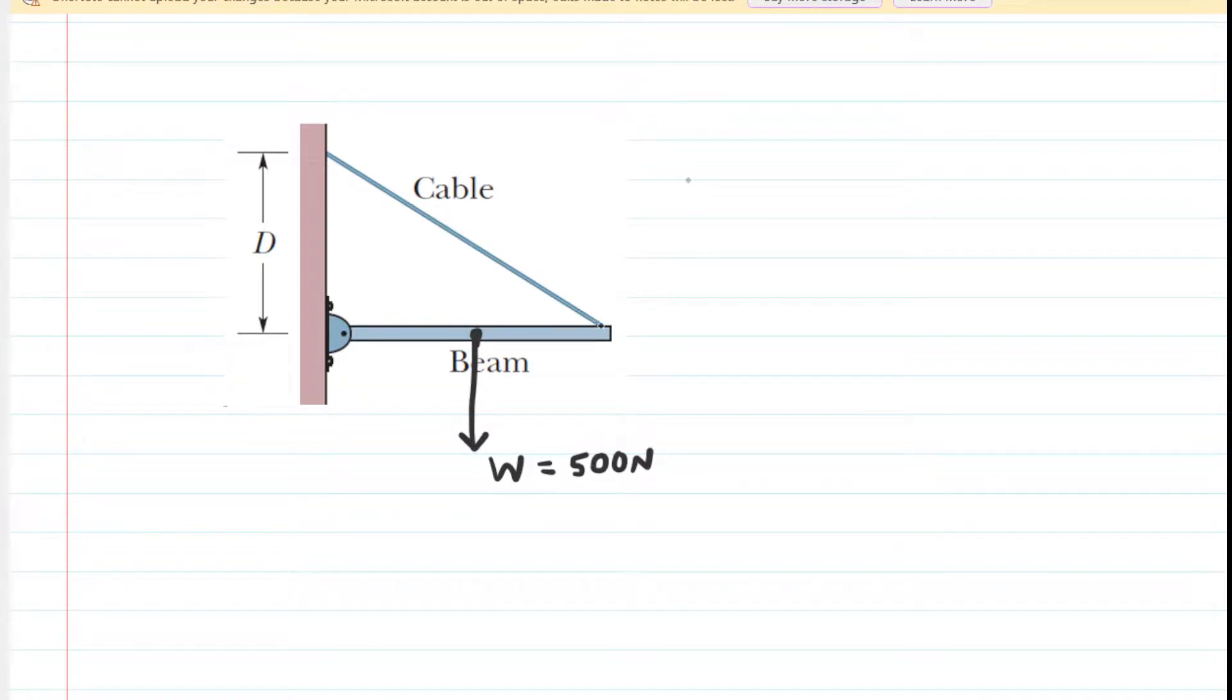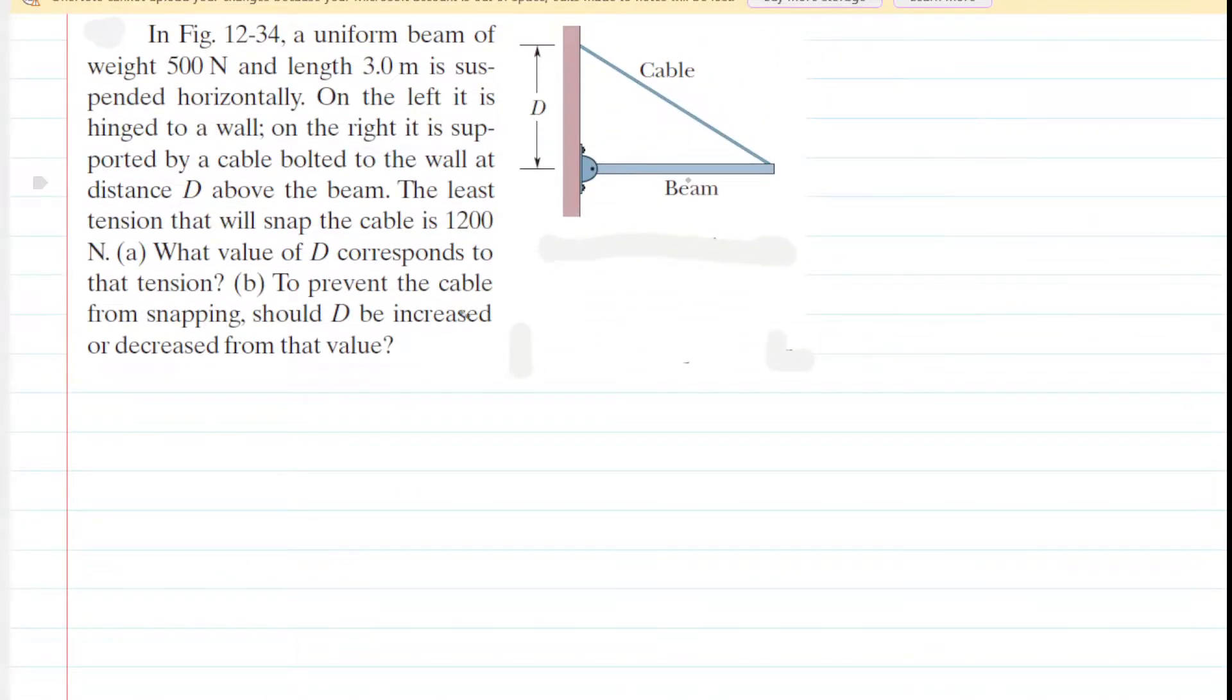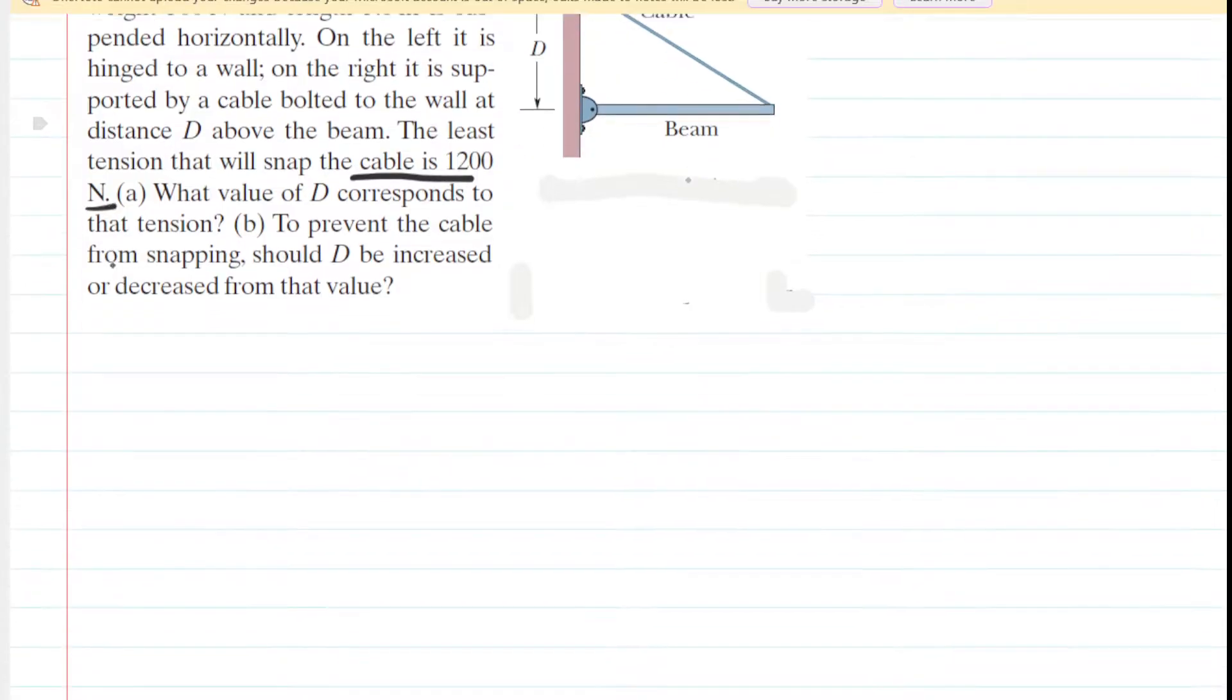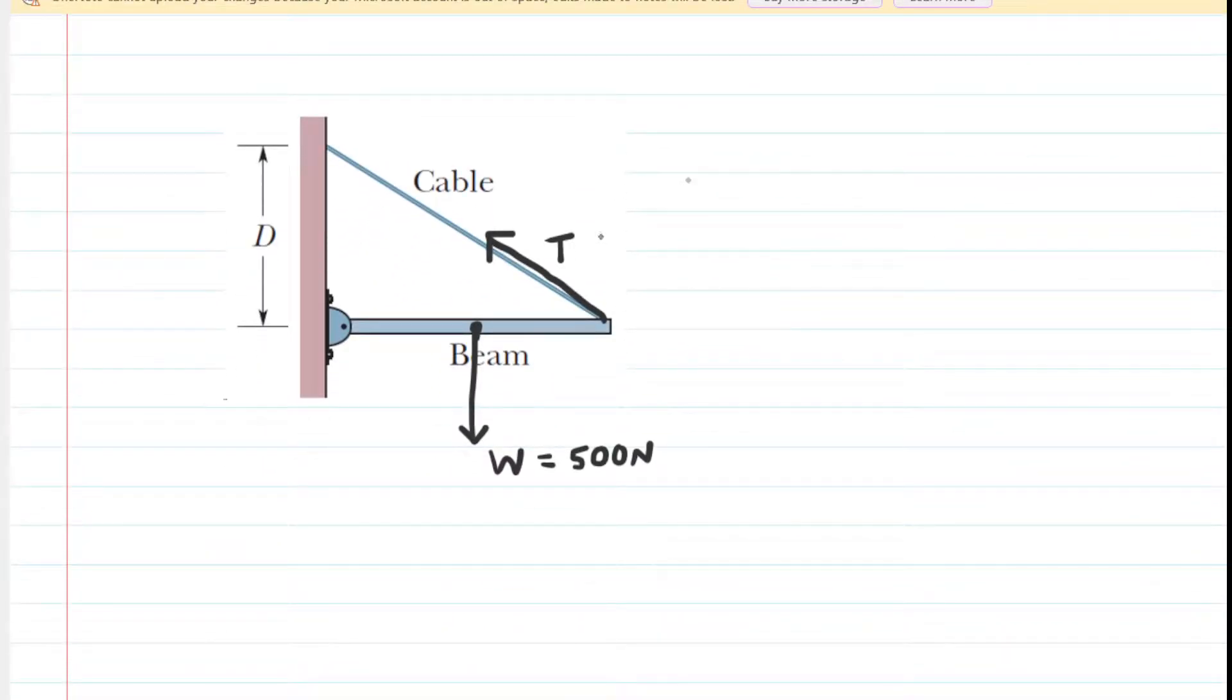In addition, we have a tension force because of the cable. The cable is pulling up and to the left on the beam in order to prevent it from spinning and accelerating. So here we have a tension force, and if we go back up to the question, the question notes that the least tension that will snap the cable is 1200 Newtons. So we can label that tension on our free body diagram.